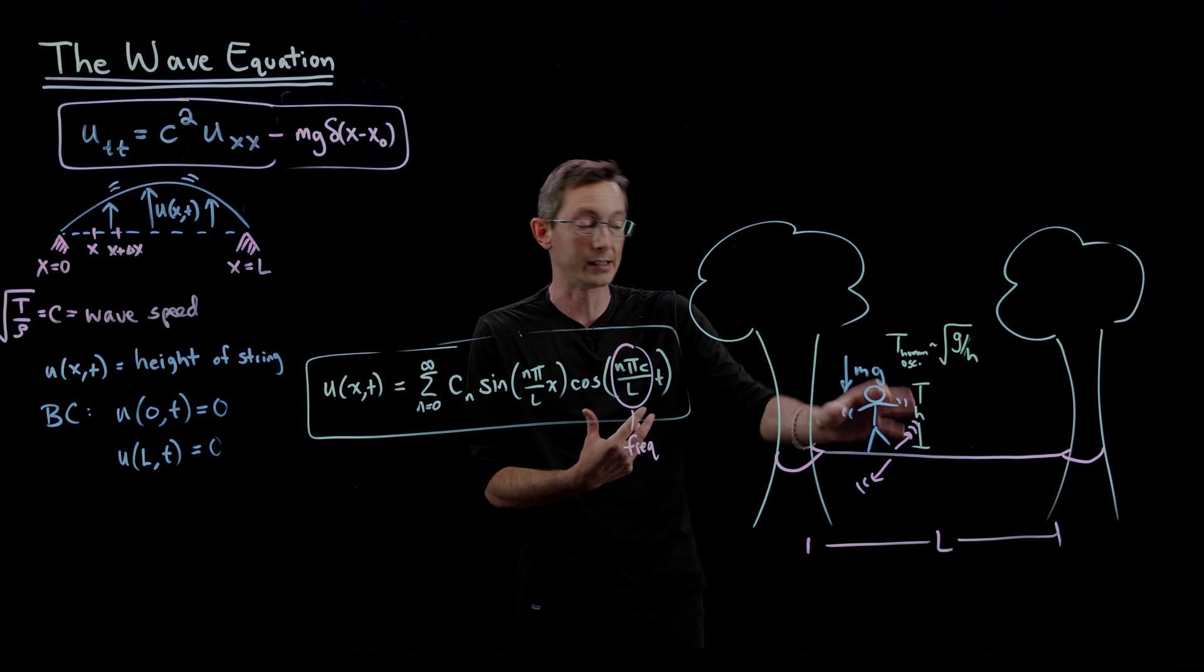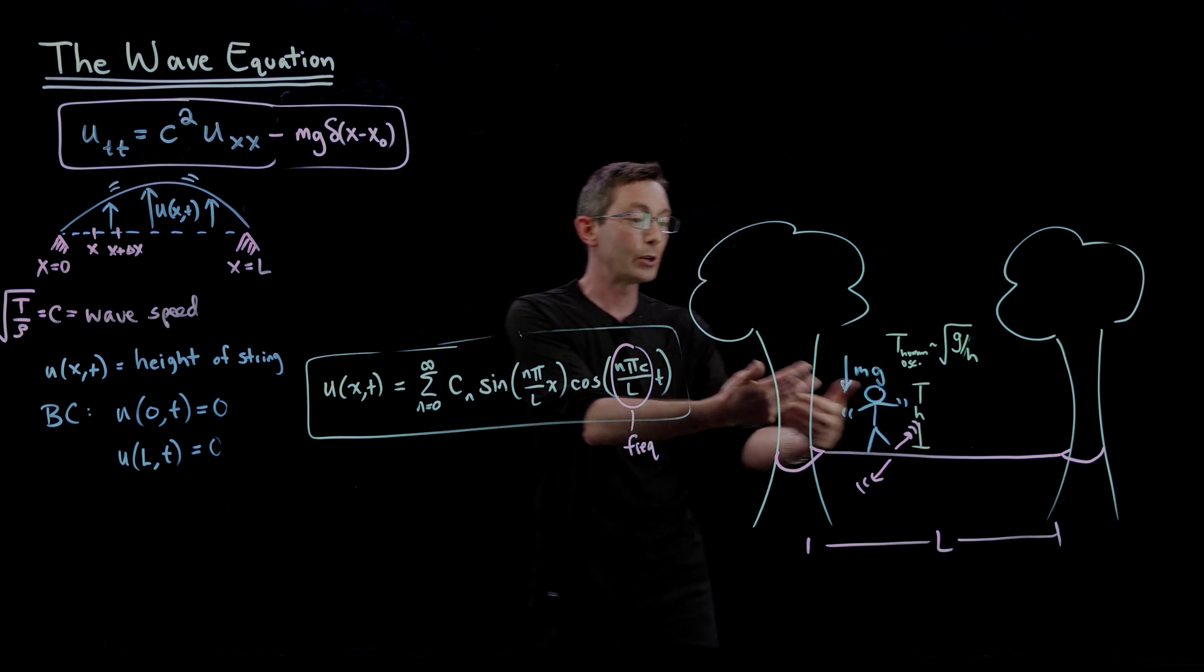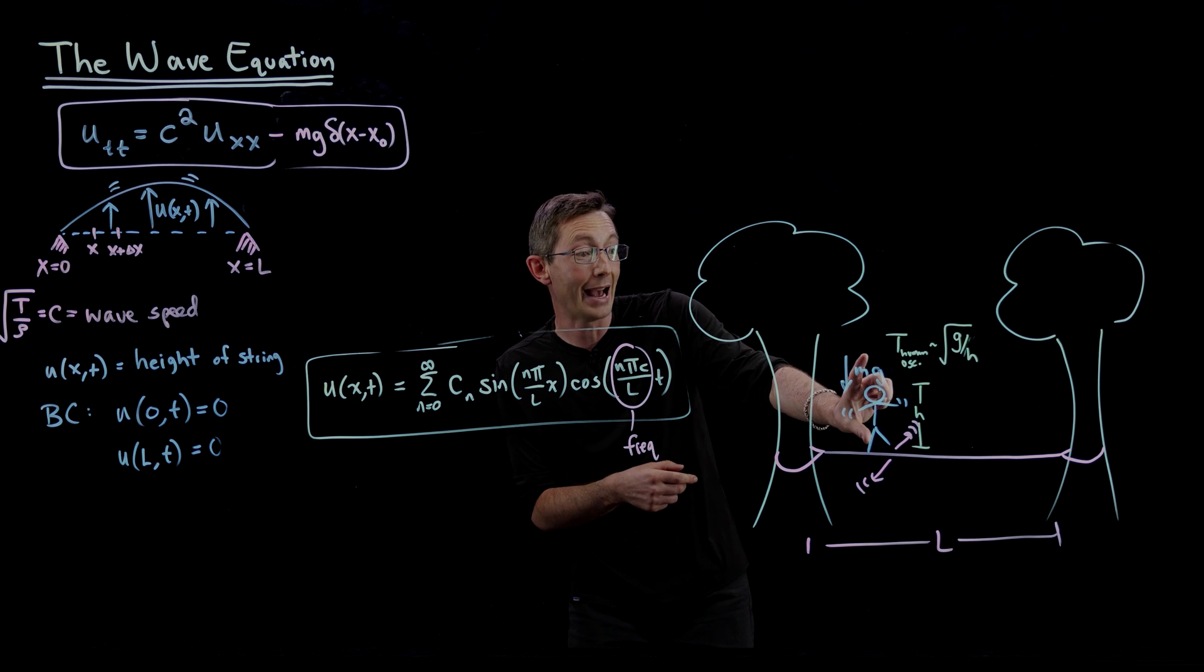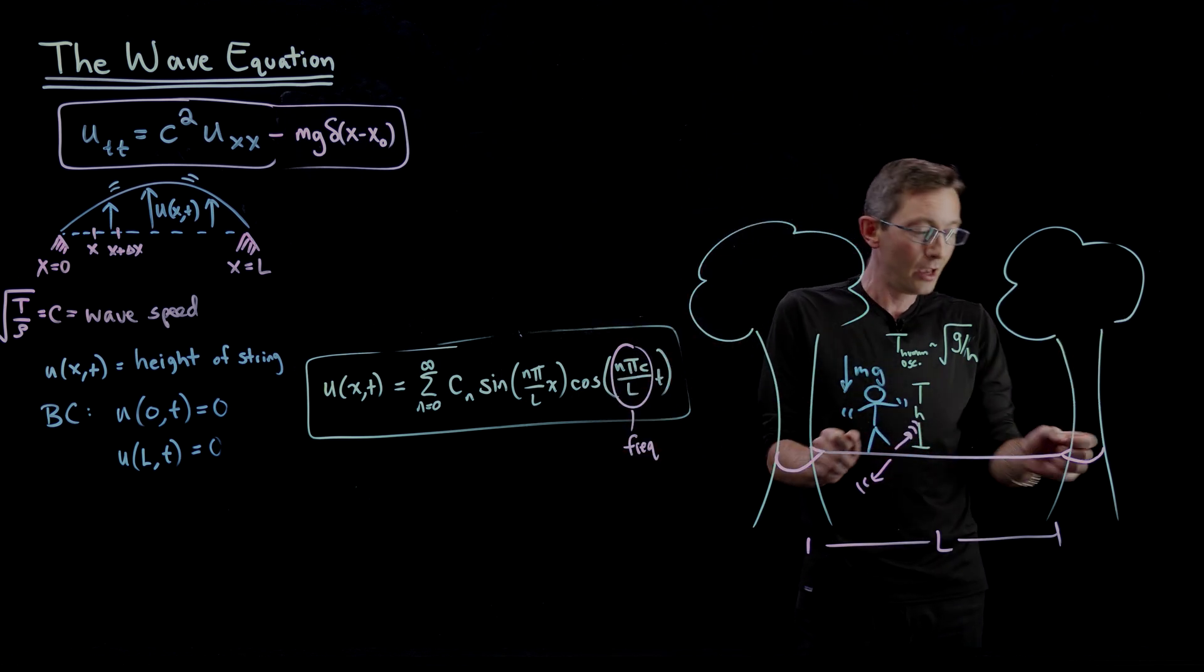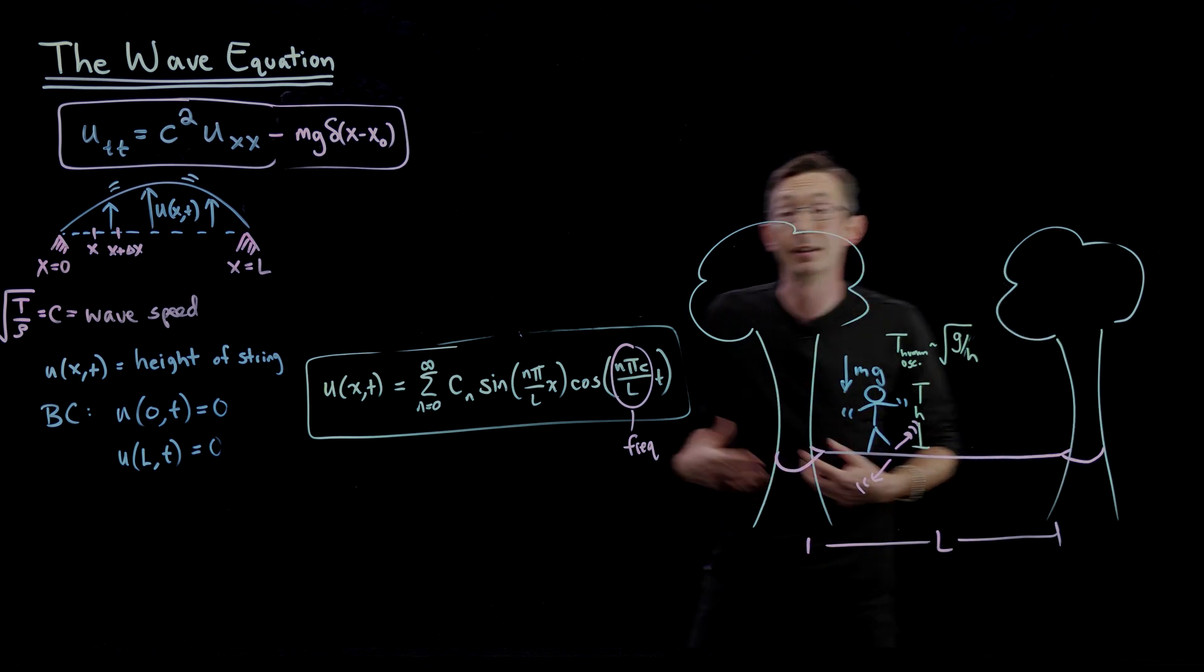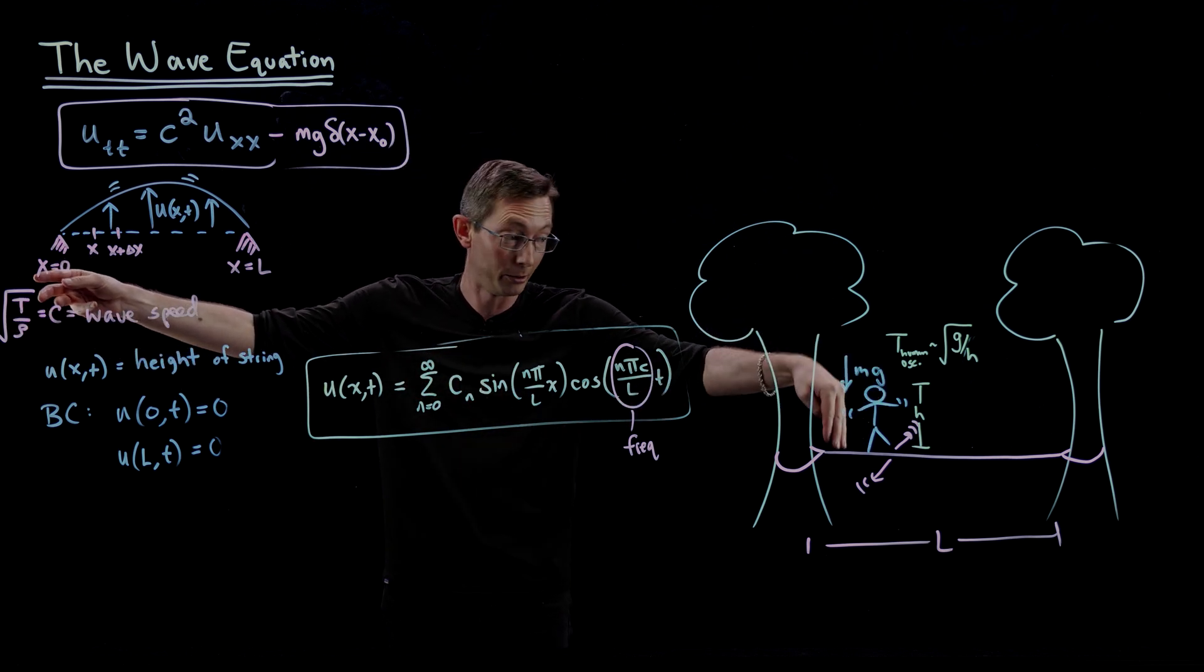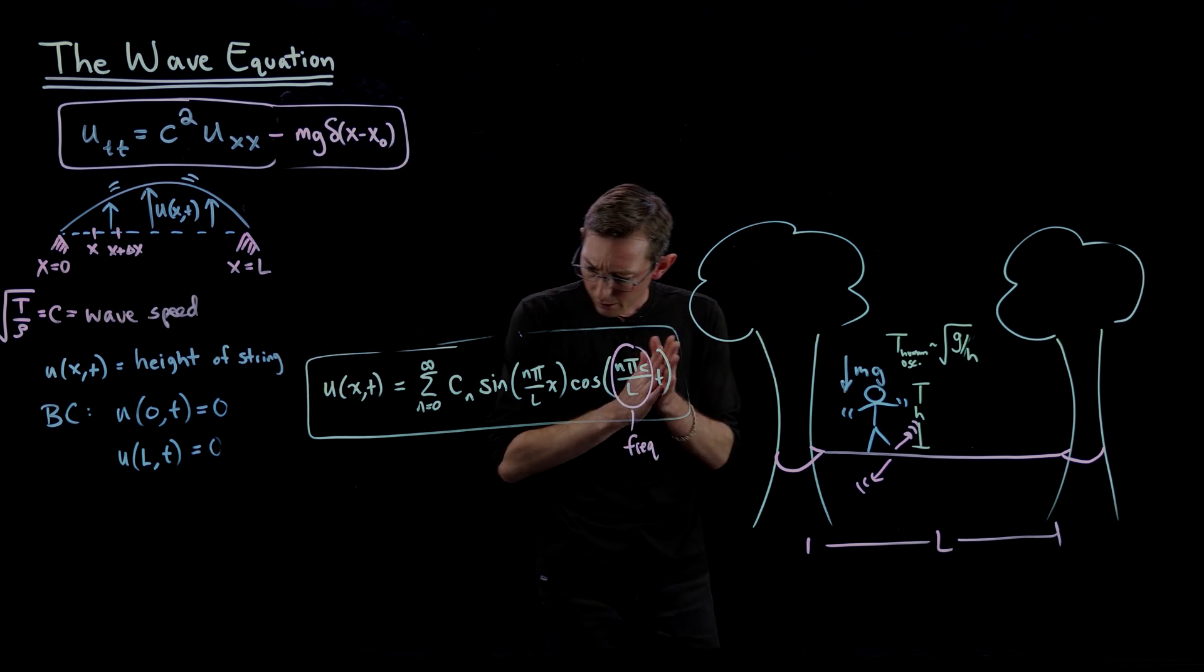Because also the mass of the person presumably is adding to the tension of the string. So you ratchet this thing tight, but when that person stands on the string they are noticeably increasing the tension by their mass. So this T goes up when the person stands on it. That's interesting too.